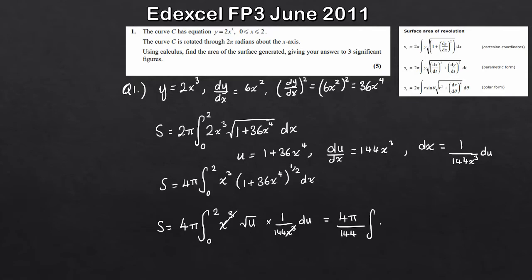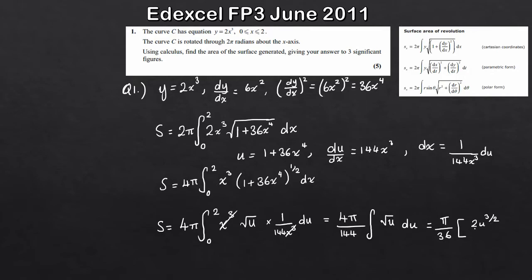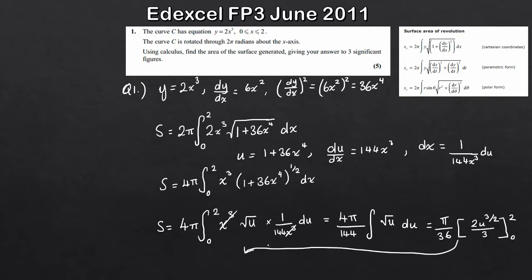So integrating √u: add 1 to the power and divide by the new power, giving (2u^(3/2))/3. We have π/36 × (2u^(3/2))/3, evaluated between x = 0 and x = 2. Substituting back and plugging in the limits correctly, to three significant figures the answer is 806.